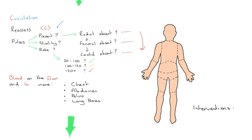Once we've checked our pulses we move on to 'blood on the floor and four more.' Blood on the floor is your reminder to reassess for catastrophic bleeding - including new catastrophic bleeding, anything you've missed, or reassessing the interventions already carried out during the catastrophic bleed stage.